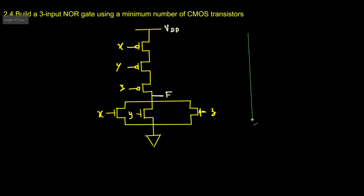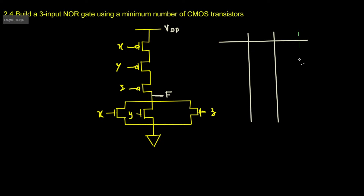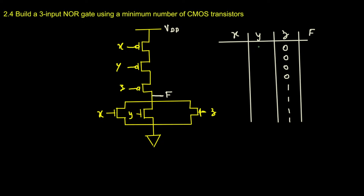We have 3 inputs, which means 2 to the power 3 — we are going to have 8 combinations. The inputs are X, Y, Z and the output is F. The 8 combinations are: 000, 001, 010, 011, 100, 101, 110, 111.